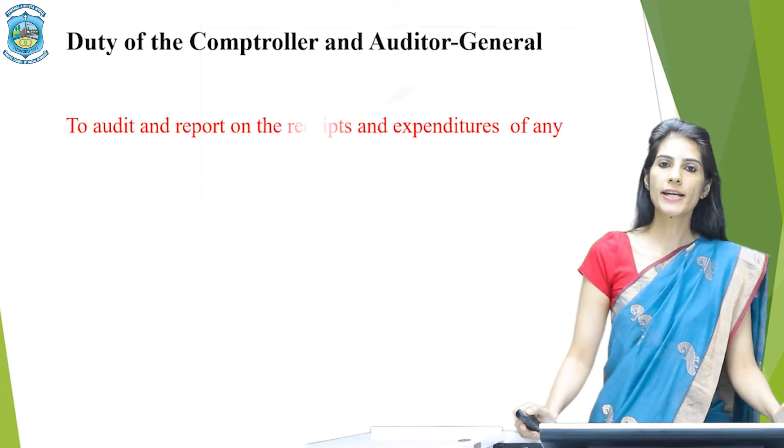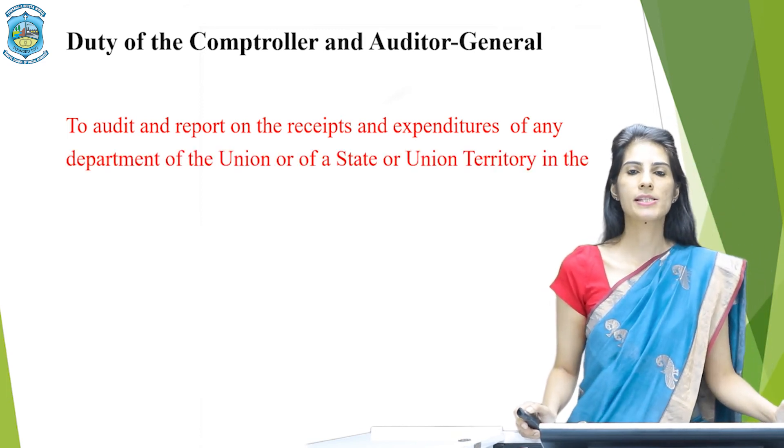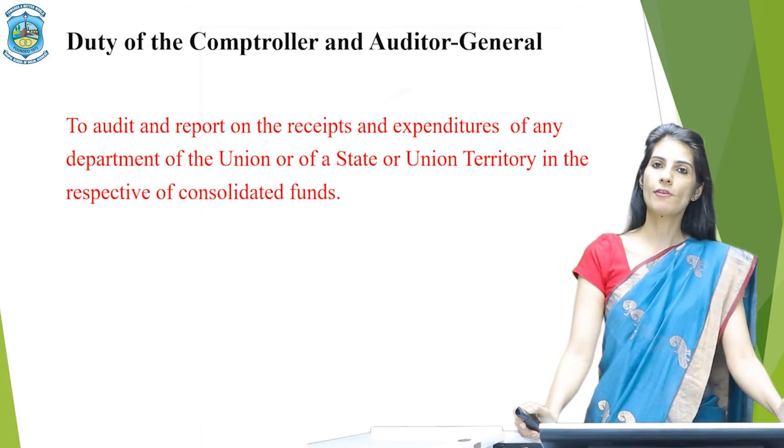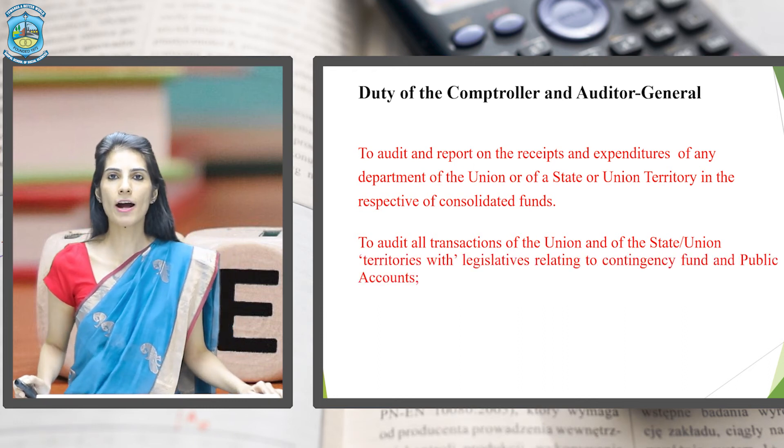The first duty is to audit and report the receipts and expenditures of any department of Union or State in their respective consolidated funds. Whatever consolidated funds we have discussed — the revenues as well as expenditures — the duty to audit them of any state or union territory will lie with the Comptroller and Auditor General of India. Second, to audit all transactions of the Union and the State in relation to the Contingency Fund and Public Accounts — whatever receipts and disbursements have been done will be checked and audited by the CAG.